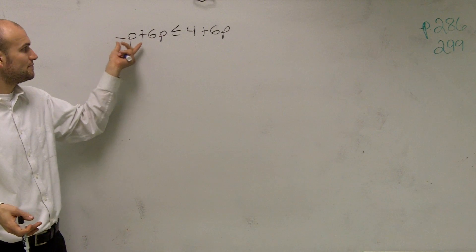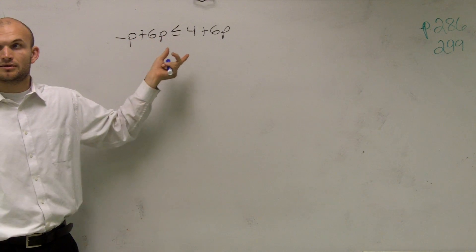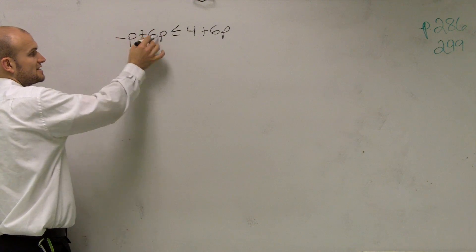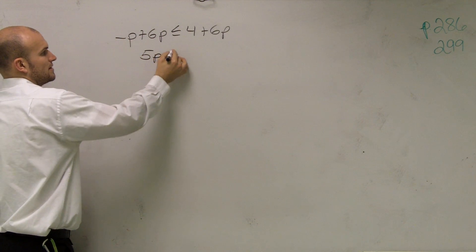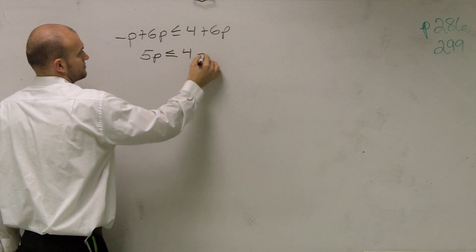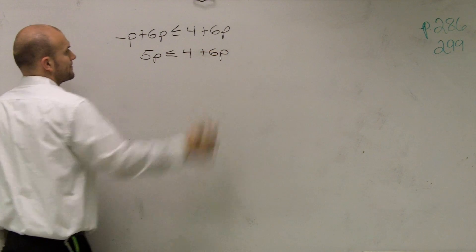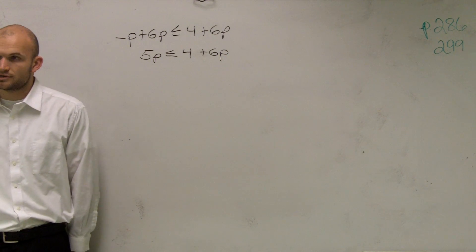So how can I combine a negative p plus a positive 6p? Well, you can just say negative p plus 6p, or 6p minus p gives you 5p. There we go. So you combine like terms.